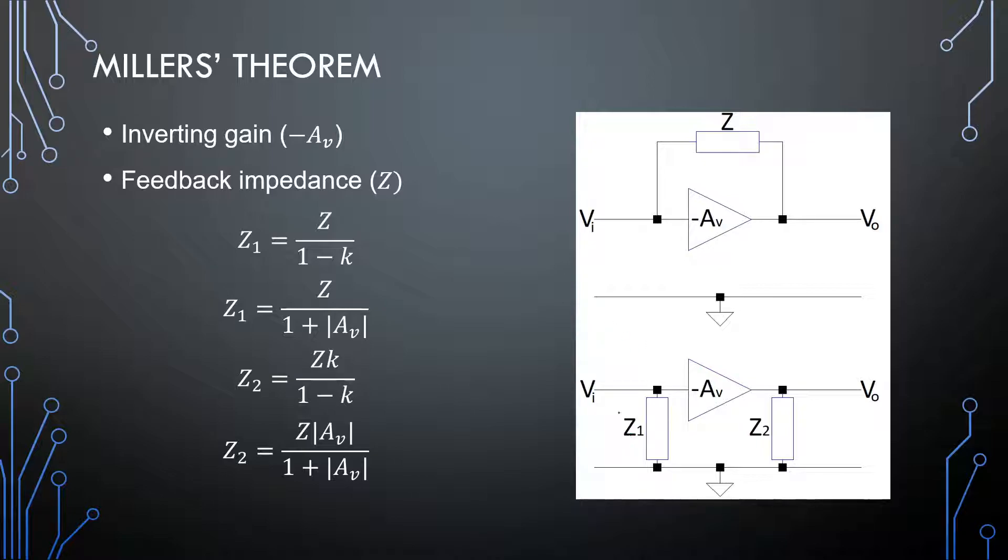So Z1 here would be the original impedance divided by 1 minus K, where K is the gain of our amplifier, in our case it's minus AV. So I'm just going to change this equation to be 1 plus the absolute value of AV, in that way you can never go wrong because if it's a negative you have to make it a positive in any case. But Miller's theorem is based on this negative or inverting amplification and the fact that we have negative feedback.